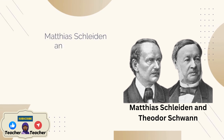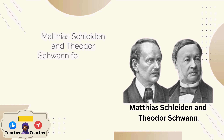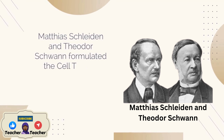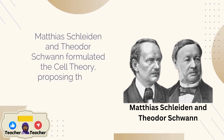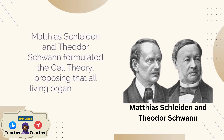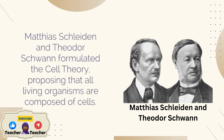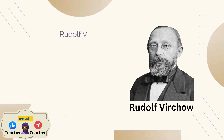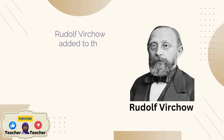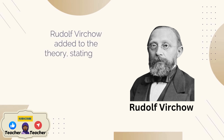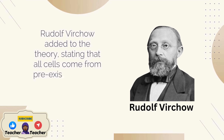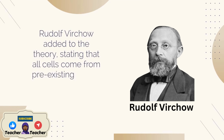Matthias Schleiden and Theodor Schwann formulated the cell theory, proposing that all living organisms are composed of cells. Rudolf Virchow added to the theory, stating that all cells come from pre-existing cells, a concept known as biogenesis.